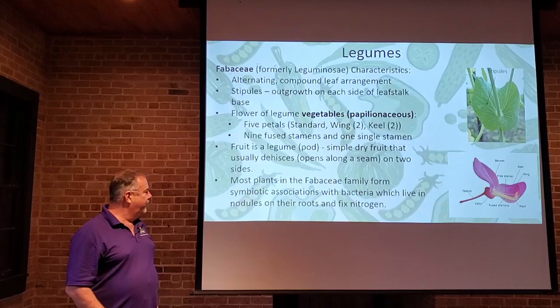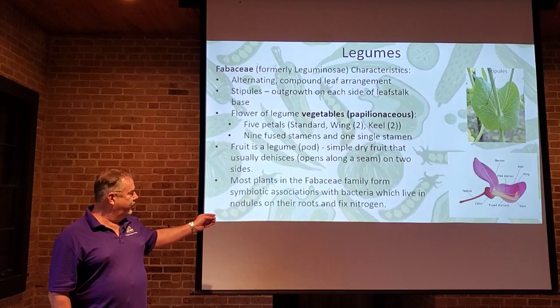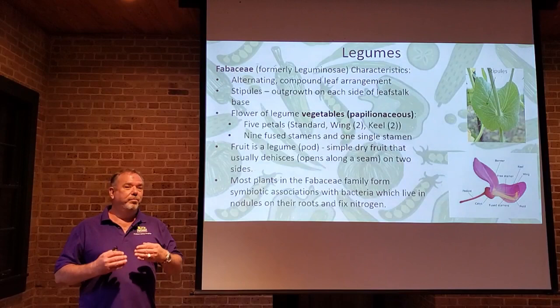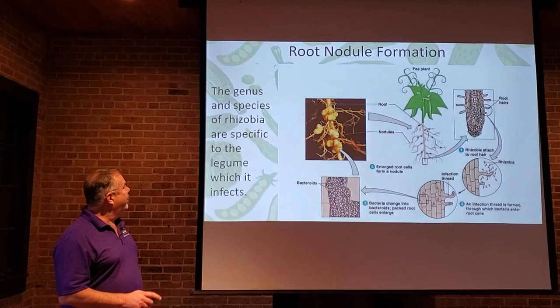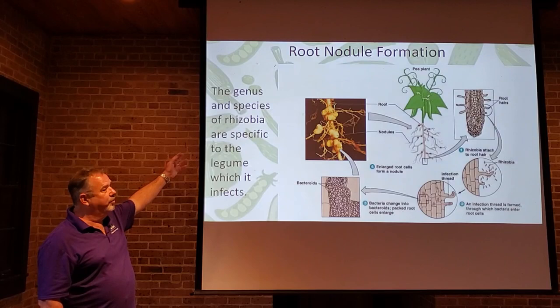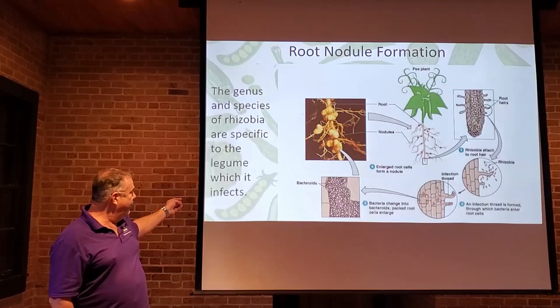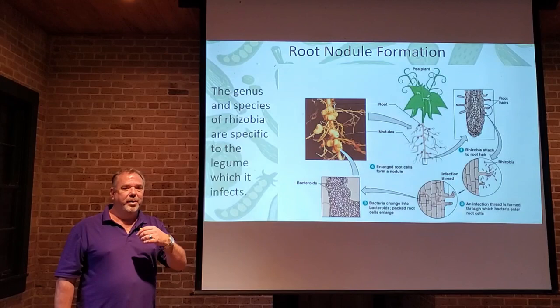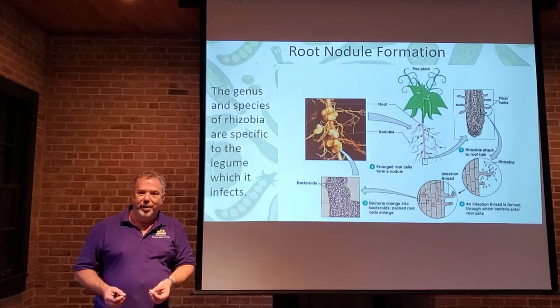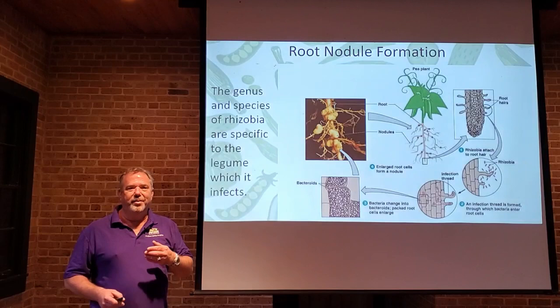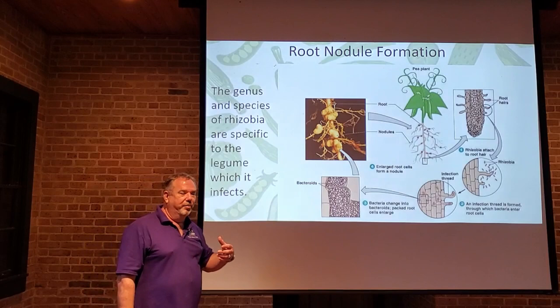Most plants in the Fabaceae family form symbiotic relationships with bacteria which live in the soil. Nodules form on those roots that fix nitrogen — they can actually make their own nitrogen out of the atmosphere, so they don't necessarily need it as fertilizer. The genus and species of rhizobia are specific to the legume which it infects, so for every type of plant — peanut or pea — there is a certain rhizobia already present in the soil. If you plant the wrong plant with the wrong bacteria, you won't get that nitrogen-fixing activity.